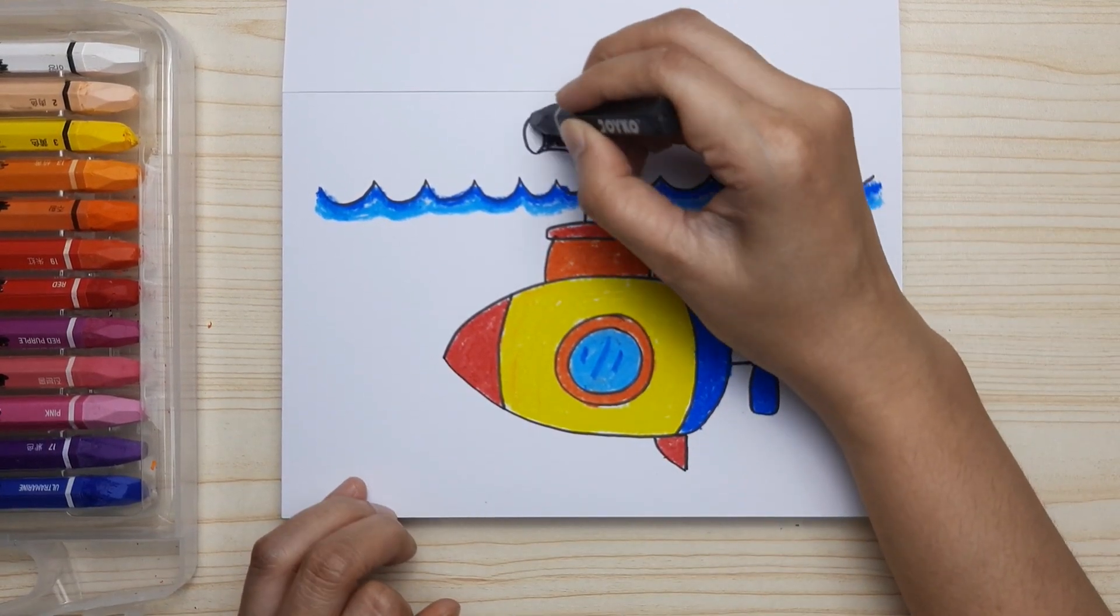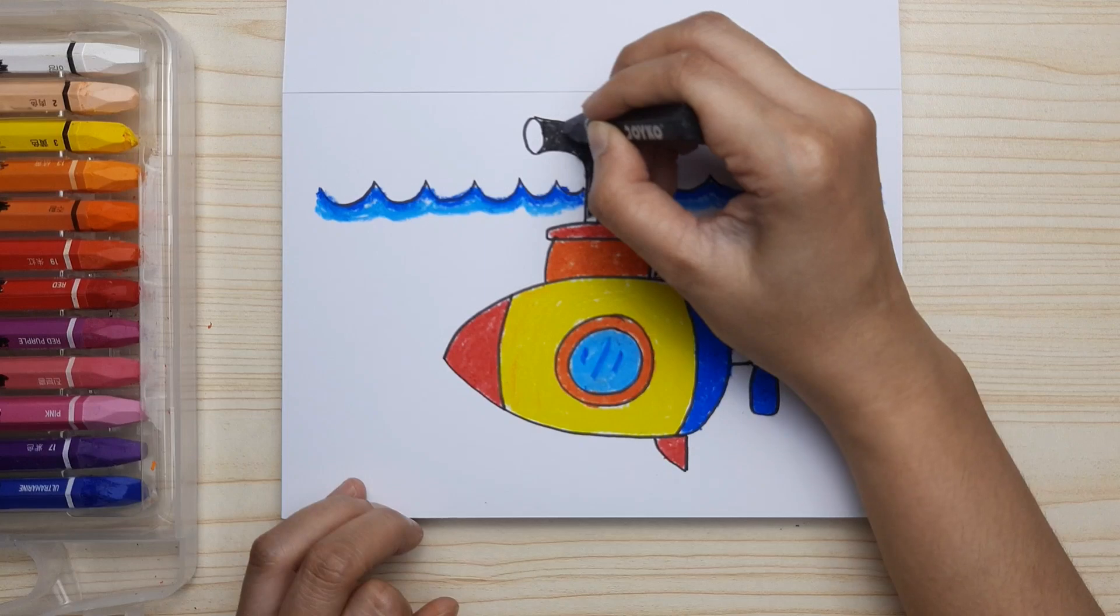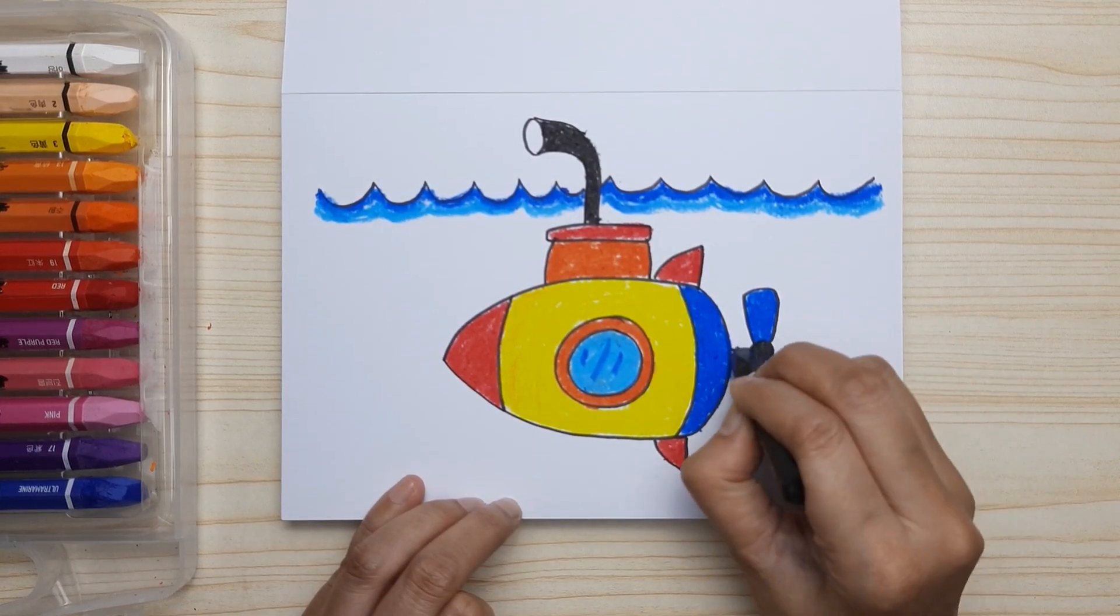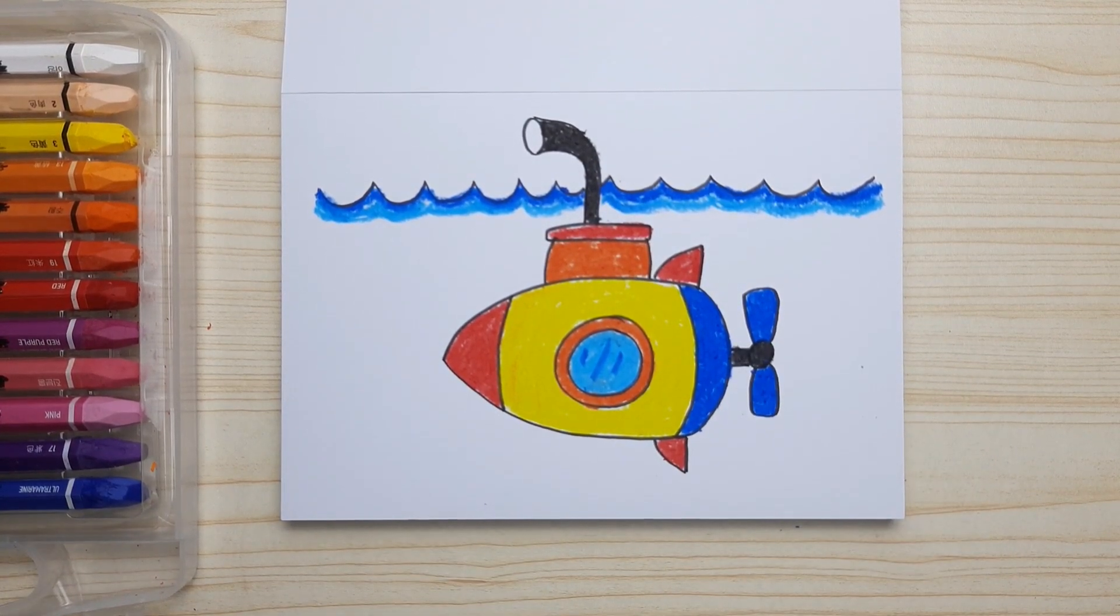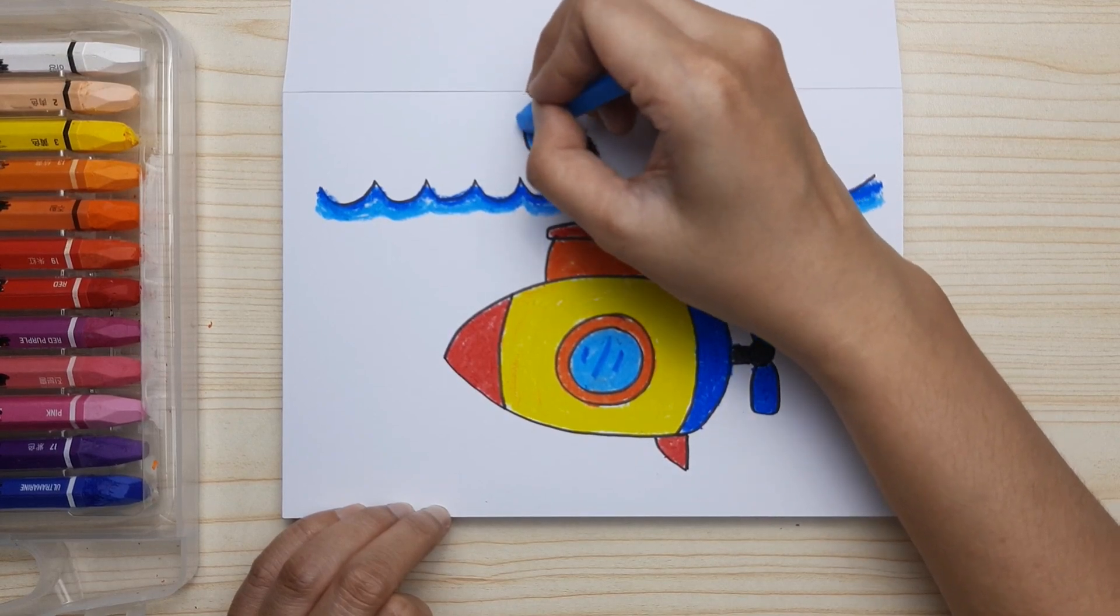The periscope is black, as well as the propeller axis. And the last, light blue for the lens. And now it's done.